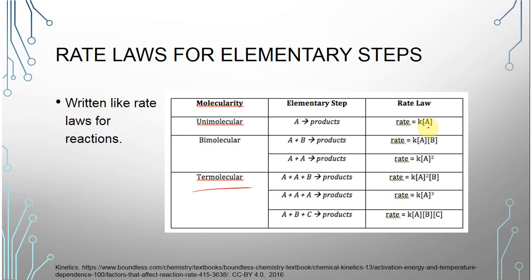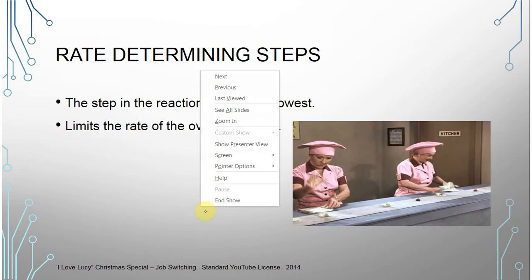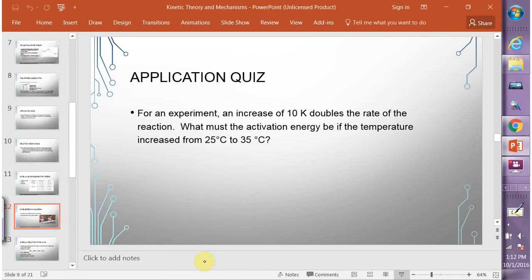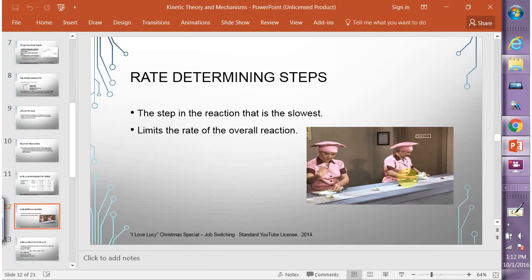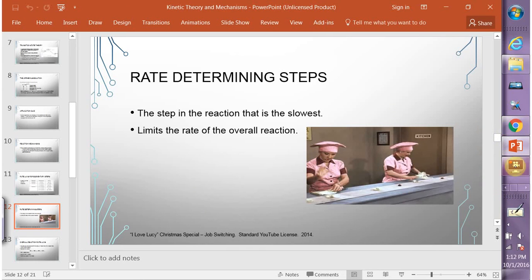So here we've got our rate is equal to reactants. In a reaction mechanism, the rate determining step is the slowest. It is the one that holds up the overall rate of the reaction.